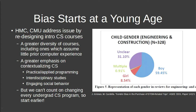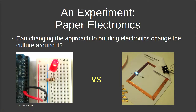Getting more people involved in technology isn't a mystery — it's just a matter of reaching across and making it easier for people to onboard, because people want to onboard into technology, we just haven't made it easy. The experiment I'm involved with asks: can we change the approach to electronics by changing the basic building blocks we use to teach it? Instead of breadboards with wires and LEDs, what if we use paper as a substrate?